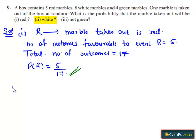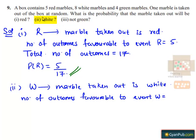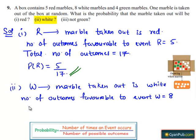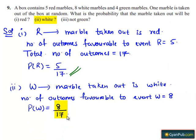Now let's see the second part. Let W be the event that the marble taken out is white. Number of outcomes favorable to event W equals the number of white marbles, which is eight. Total number of outcomes equals 17. Probability of event W, that is P of W, equals eight divided by 17. Therefore, the probability that the marble taken out will be white is eight divided by 17.